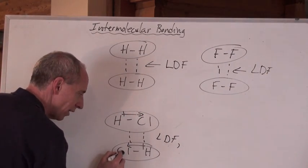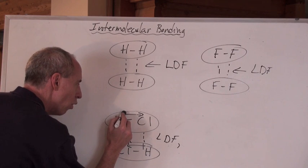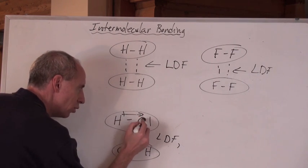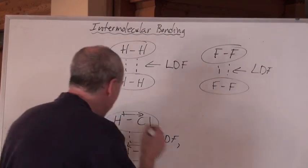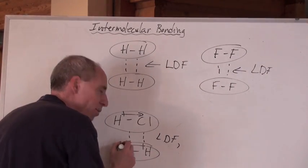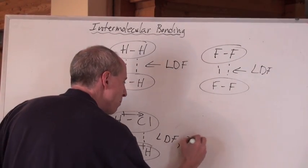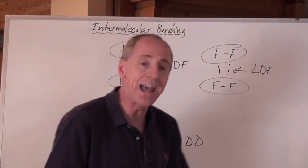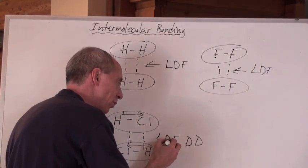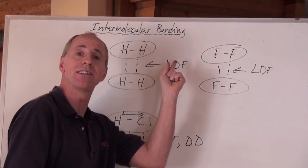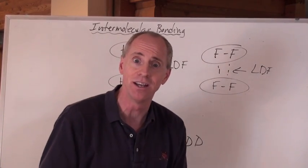And the partially negative end here attracts the partially positive end, and that's a dipole attracting a dipole. So it's called a dipole-dipole force, and something that generally has dipole-dipole and London dispersion will have a higher boiling point than something that just has London dispersion. Cool!